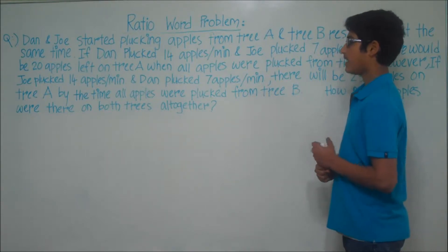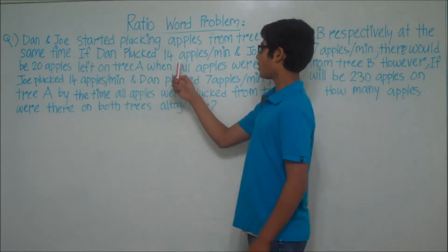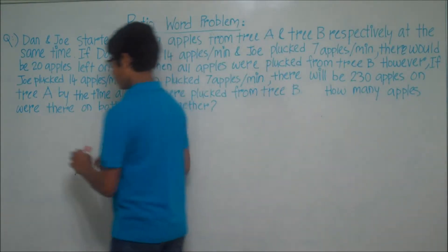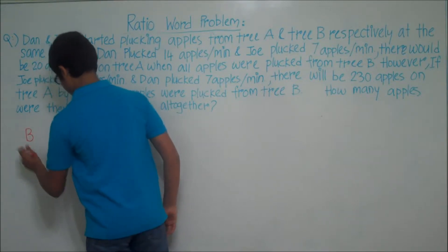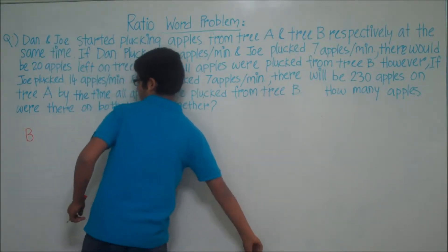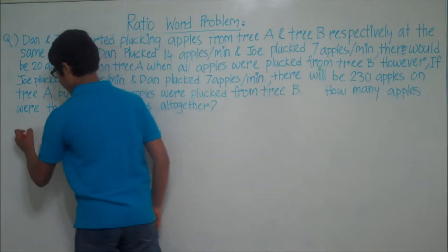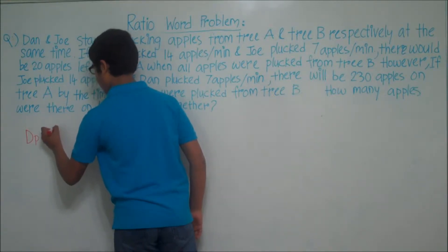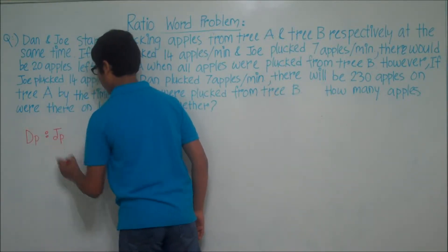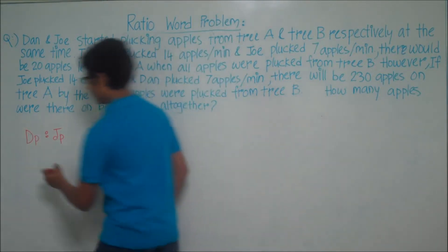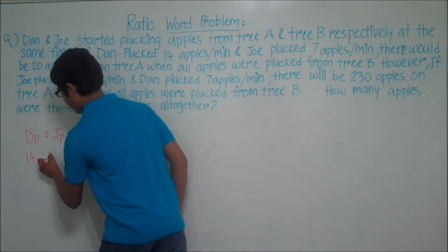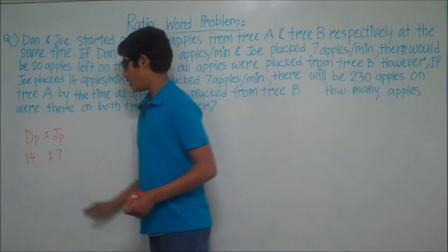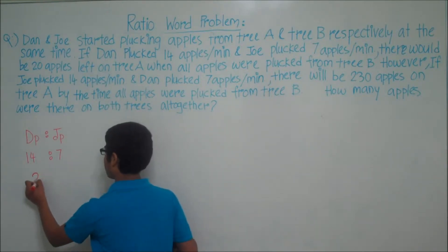The problem states that Dan plucked 14 apples per minute and Joe plucked 7 apples per minute. So the ratio of Dan plucked (DP) to Joe plucked (JP) is equal to 14 to 7. This ratio can be reduced to 2 to 1.